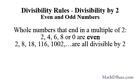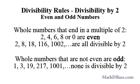Any whole number that ends in 2, 4, 6, 8, or 0 is divisible by 2 and called even. So any even number other than 0 is a multiple of 2. If a number is not even, it is called odd.